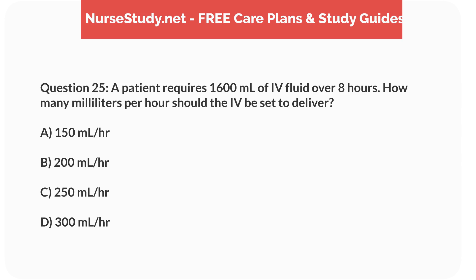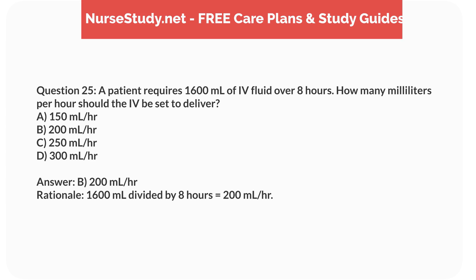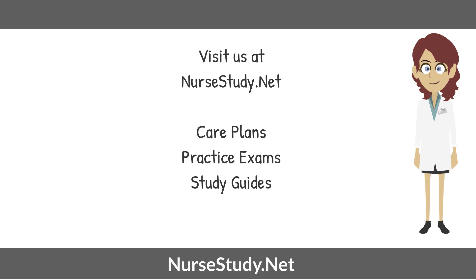Question 25. A patient requires 1,600mL of IV fluid over 8 hours. How many mL per hour should the IV be set to deliver? a. 150mL per hour, b. 200mL per hour, c. 250mL per hour, d. 300mL per hour. Answer: b. 200mL per hour. Rationale: 1,600mL divided by 8 hours equals 200mL per hour. Visit Nursestudy.net for more nursing practice exams, care plans, and study guides.